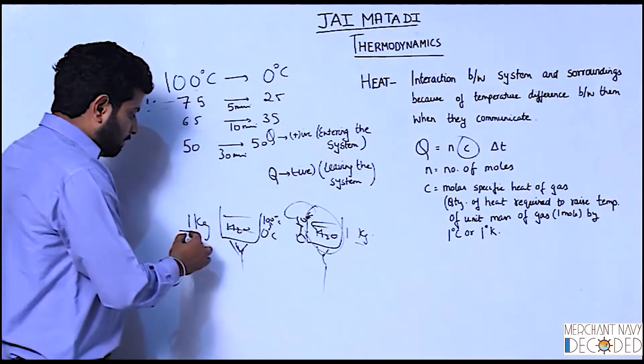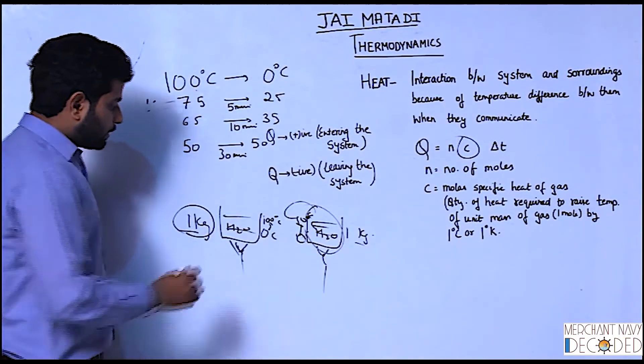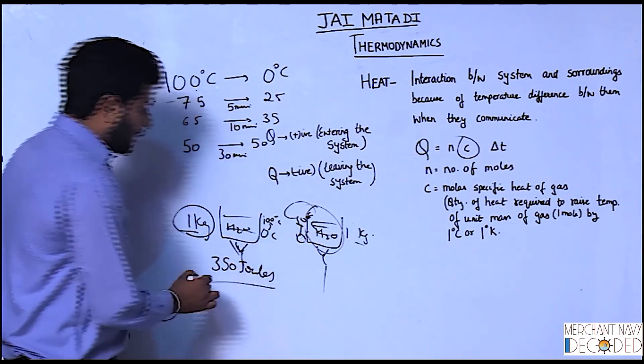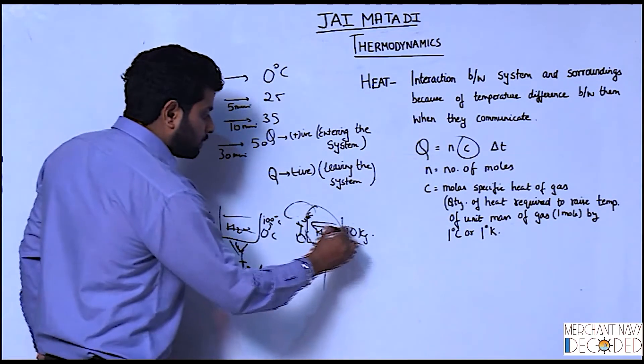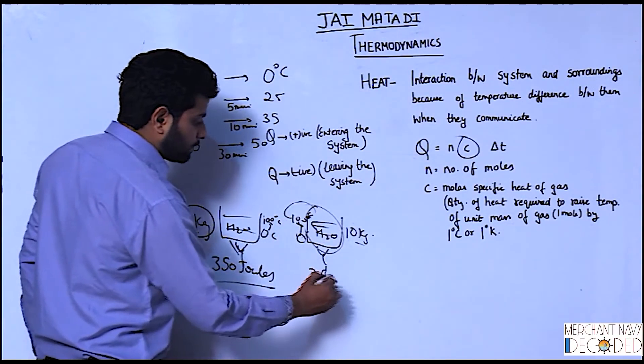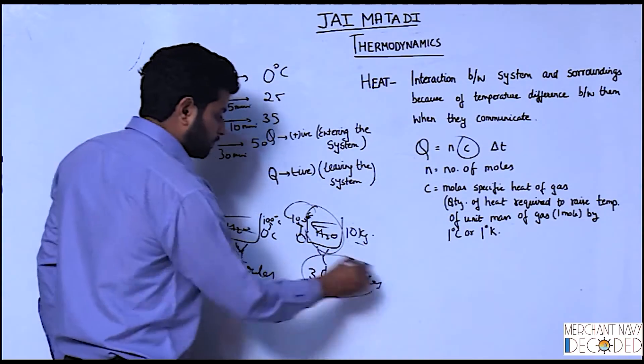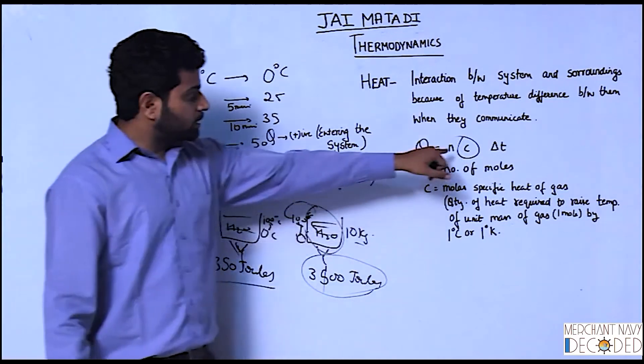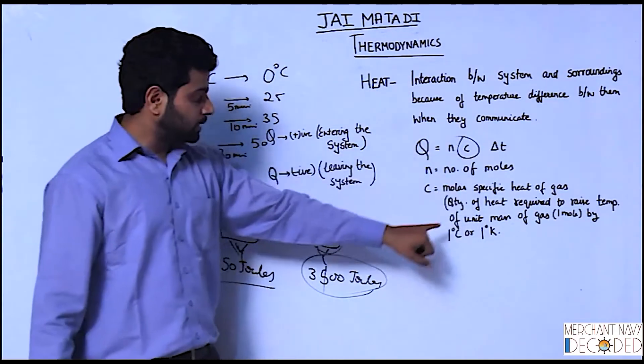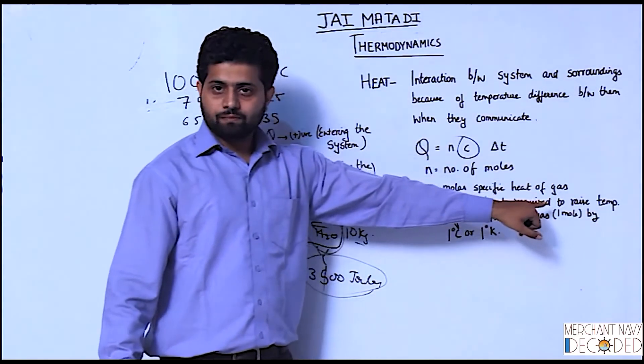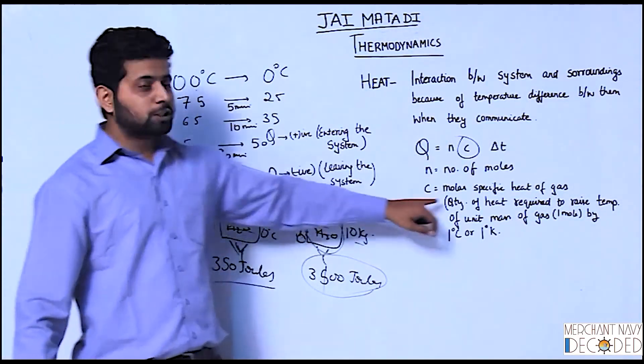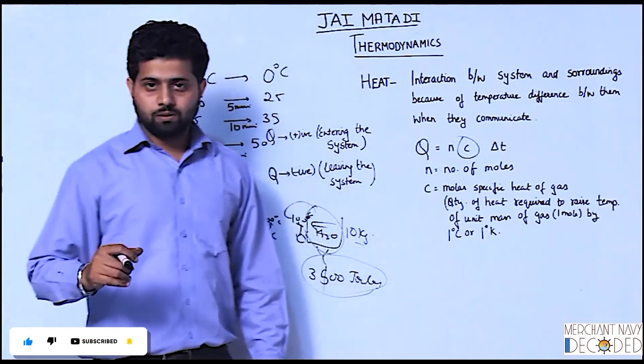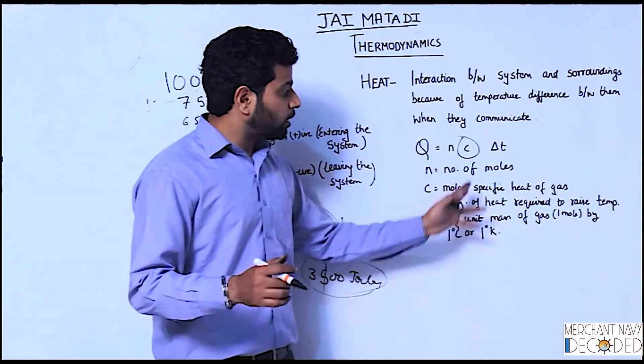See, when I was heating 1 kg from 0 to 100, say it took me 350 Joules energy. And when I was heating 10 kg from 0 to 100, it took me 3500 Joules, makes sense. So mass is over here, delta T is over here. What is the difference which is changing this? This is C. What is it? Molar specific heat of gas. In case of liquid, not molar, but specific heat of liquid. In case of liquids, for gases, it is molar specific heat of gas.